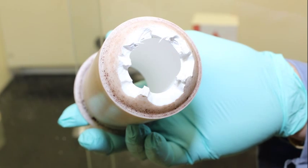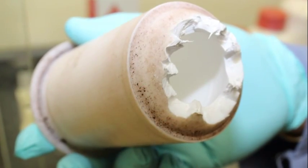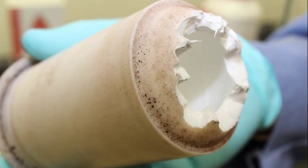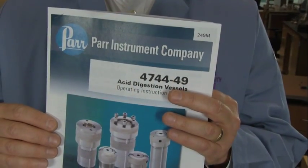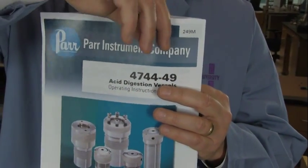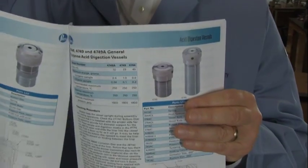This rupture of a laboratory reactor pressure vessel cup was caused by improper assembly. Before starting any experiment using pressure vessels, carefully read all vessel manufacturers documentation.